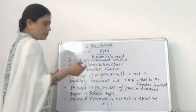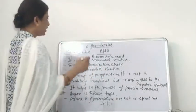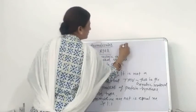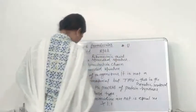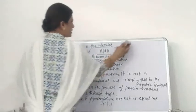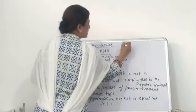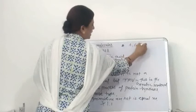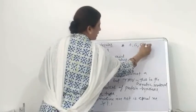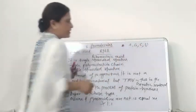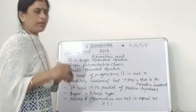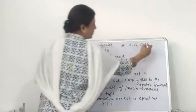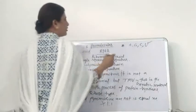One important difference between DNA and RNA molecule: in the RNA molecule, the nitrogenous bases are adenine, guanine, cytosine, and uracil. In the DNA molecule, thymine is present, but in RNA, thymine is replaced by uracil.